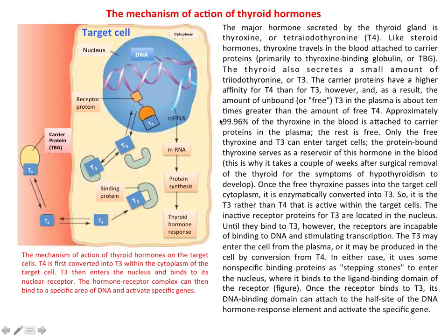After secretion into the blood, T3 and T4 conjugate with carrier proteins for stability. Before entering inside the target cell, T4 is released from its carrier protein — this is called free thyroxine. This free thyroxine can enter inside the cytoplasm of the target cell, where it is converted into T3, triiodothyronine. T3 can also bind with some binding protein for stability.